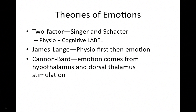For theories of emotion, check out another video, but you've got the two-factor theory, also known as the Schachter-Singer labeling theory. The key things are the cognitive label and the two factors: the physiology and the label — that's the one most accepted today. There's also the James-Lange theory — physiology first, then emotion — and then the Cannon-Bard theory, where emotion comes from hypothalamus and dorsal thalamus stimulation. Those three theories of emotion are covered in more detail in another video.